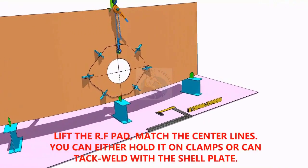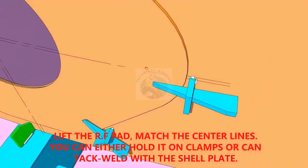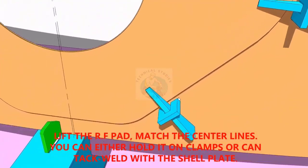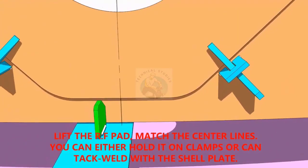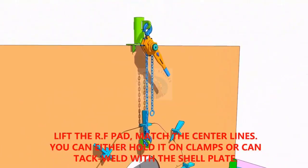TAC weld the reinforcement pad on the shell plate. You can either TAC weld directly on the shell or fix it with clamps as shown. Make sure the center lines on the shell plate and the pad are matching.